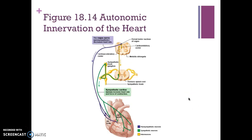Figure 18.14 depicts both the cardioacceleratory and the cardio-inhibitory centers — this is how our bodies modify the basic heart rate. The purple neurons here are the parasympathetic neurons going from the dorsal motor nucleus of the vagus down the cardio-inhibitory pathway to the SA and AV nodes. The sympathetic neurons go from the sympathetic trunk down to the SA and AV nodes and the myocardium.